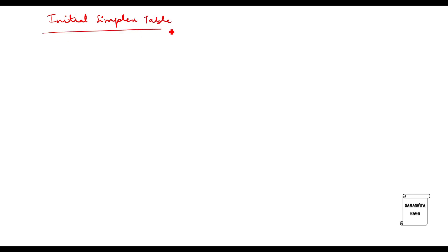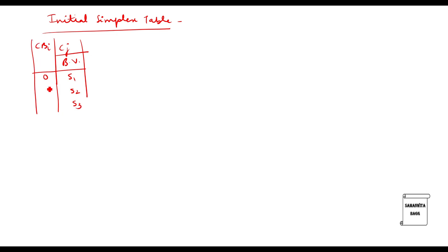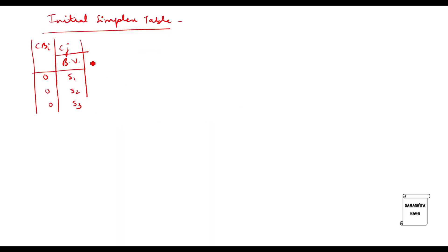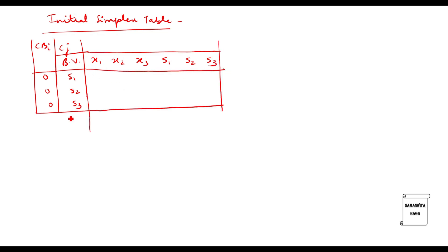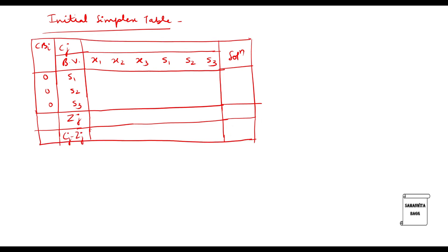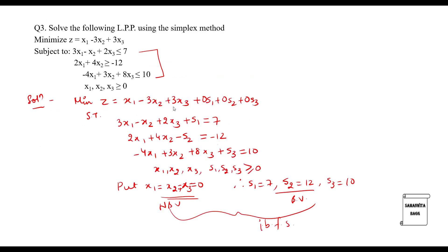Now I will make the initial simplex table. I start with cBj, cj, basic variable. The basic variables are s1, s2, s3, with coefficients 0, since they are not in the objective function z. Next I write the column headers: x1, x2, x3, s1, s2, s3, followed by zj and solution columns. The cj row has values 1, minus 3, plus 3, then 0 0 0.